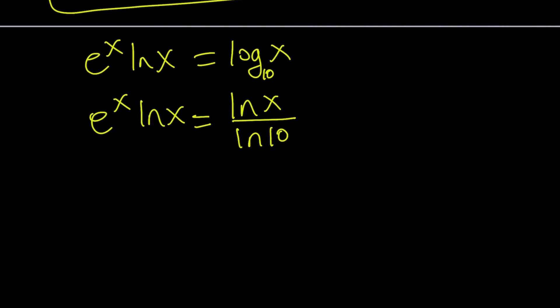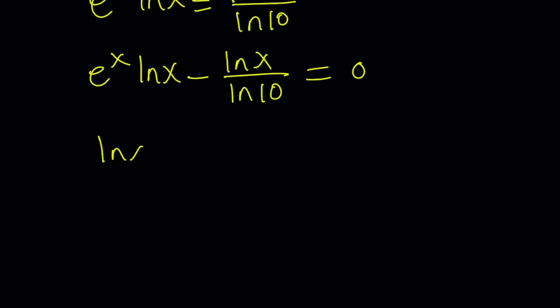When you see an equation like this, I know it's a temptation to just cross out ln x and simplify the whole expression. That's not good though, you're going to be losing some solutions. Instead, you want to put everything on the same side. Division is not good. Multiplication is sometimes not good because you might be introducing extraneous solutions. But subtraction and addition are okay. Let's subtract ln x over ln 10 from both sides and set it equal to 0. Now we want to take out ln x because that is a common factor.